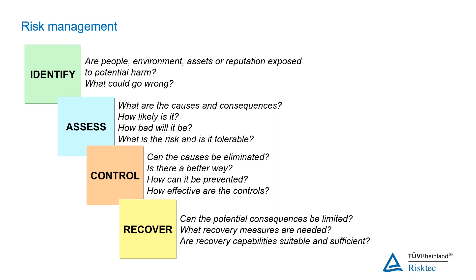For us to be able to even start to say that we're managing our risks, it is critical that we understand what we're dealing with: what could affect the things — people, plant, project, business, etc. — that we care about or are responsible for; where they come from; how they might manifest themselves; and what the possible loss of control scenarios are. And what controls we have, both preventative and mitigative, in place to manage them. These four things allow us to characterise the risk and to understand it, such that we're able to make an informed decision about how well we are managing that risk, and also whether it is, to our organisation, an acceptable risk.